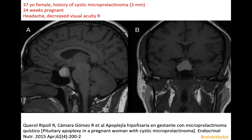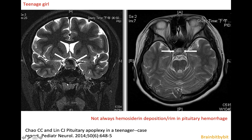In macroadenomas you can also have hemorrhage or hemorrhagic infarction leading to an acute presentation. This is an example of a pregnant 37-year-old female known with a micro prolactinoma who presented at the ER with headache and decreased vision in her right eye. On these T1-weighted images you can see a sellar and suprasellar mass with a fluid-fluid level and displacement of the optic chiasm. It is important to realize that, in contrast to an intraparenchymal cerebral hemorrhage, a hemorrhagic macroadenoma does not always have a hemosiderin rim.